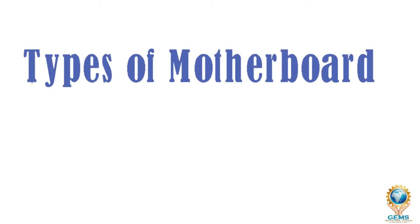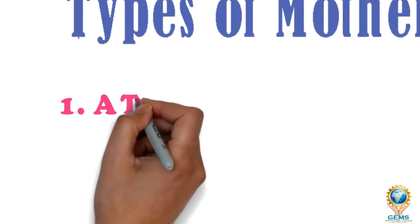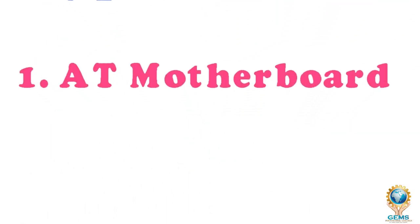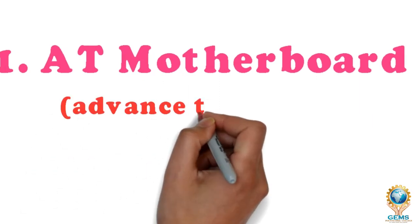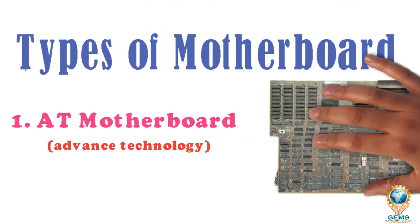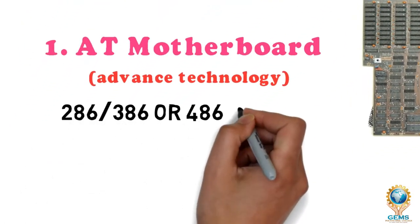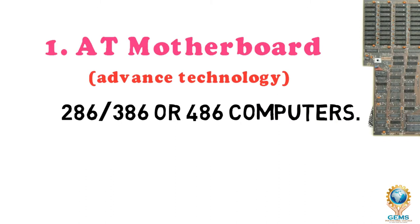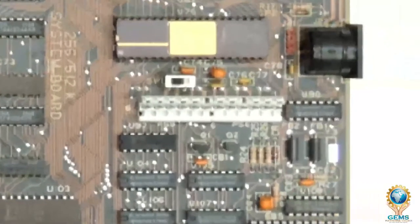According to different types of processor, different types of motherboard are there. First of all we are going to see about the AT motherboard, that is called the Advanced Technology motherboard. It is the oldest of the main boards. This motherboard was used in earlier 286, 386, or 486 computers. The AT motherboard consists of an advanced technology power connector, that's why it is called the AT motherboard.